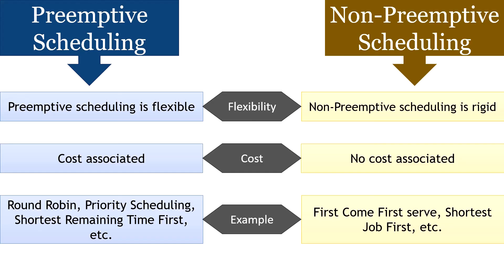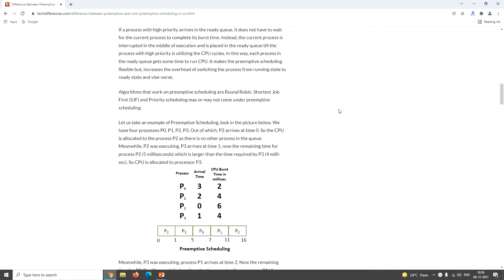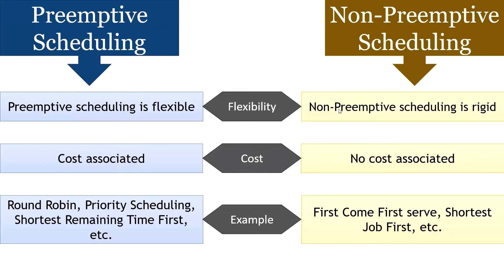The examples of primitive scheduling are round robin, priority scheduling, and shortest remaining job first. The examples of non-primitive scheduling are first come first serve and shortest job first. For more details, you can refer to the official website tickdifferences.com — the URL is provided in the description below. Please like and share this video, don't forget to subscribe to the channel, and put your comments and queries in the section below. We'll be back with a new video soon — take good care of yourself!